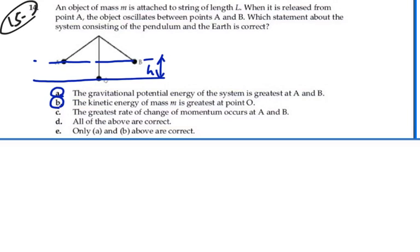Now, statement C: The greatest rate of change of momentum occurs at A and B. As we swing along this path, the restoring force is greatest at points A and B where we're furthest away. The force is greatest along that arc back towards equilibrium.